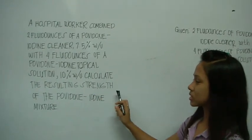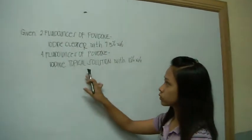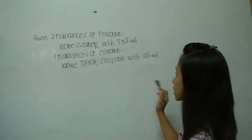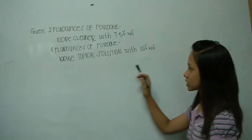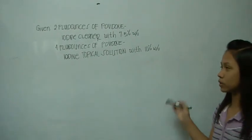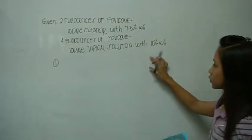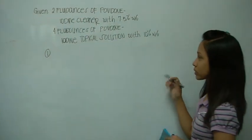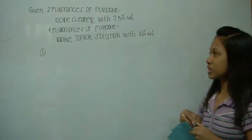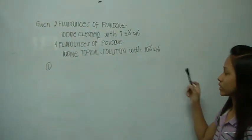In this problem, we need to find the resulting strength of the Povidone-Iodine mixture. Here are the given: 2 fluid ounces of Povidone-Iodine cleaner 7.5% w/v and 4 fluid ounces at 10% w/v. The first step: we need to express the percentage strength as a decimal fraction. In order to get the decimal fraction of each, we will divide it by 100.